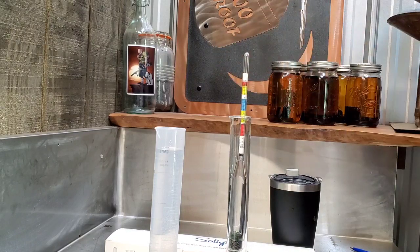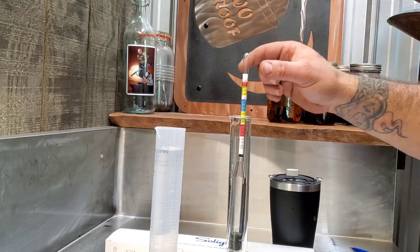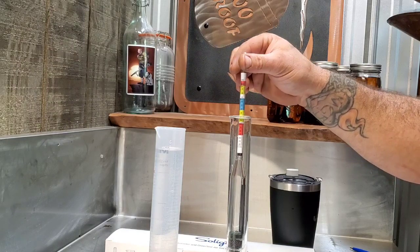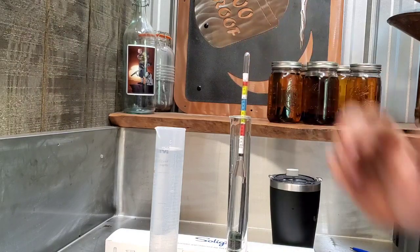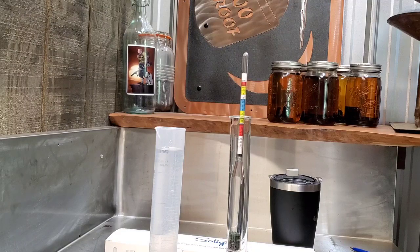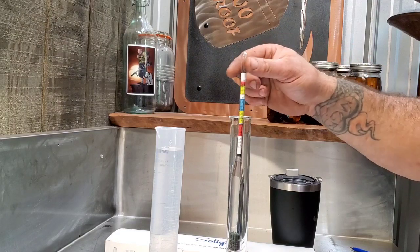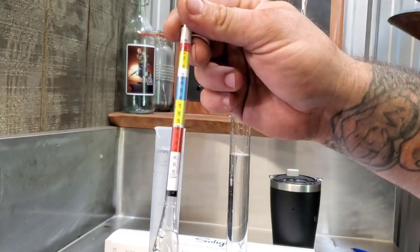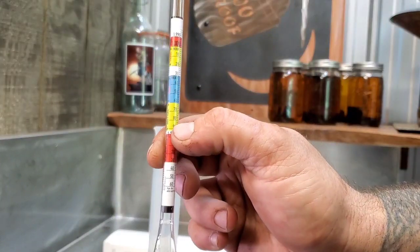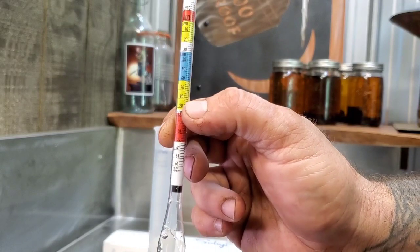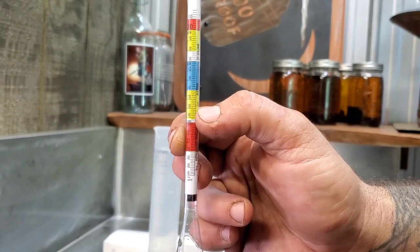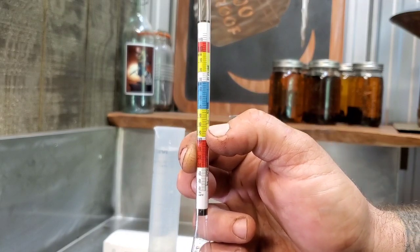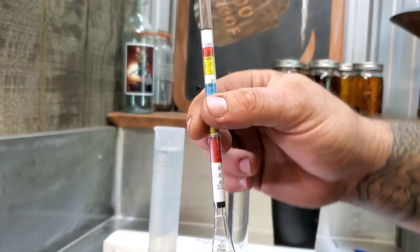Now, at approximately two pounds per gallon of just regular white granulated sugar, I'm sitting right about 1.080. So we look over here on our hydrometer, 1.080, it's sitting just above 10%.